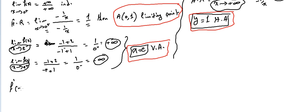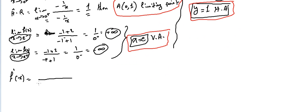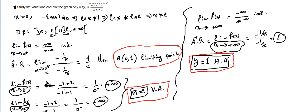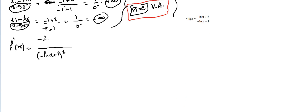Next, we find the derivative. Using the quotient rule, f'(x) = (u'v − v'u) / v², where the denominator squared is (−ln(x) + 1)². The numerator is: the derivative of (−ln(x) + 2), which is −1/x, multiplied by (−ln(x) + 1), minus the derivative of (−ln(x) + 1), which is −1/x, multiplied by (−ln(x) + 2), all over the denominator squared.